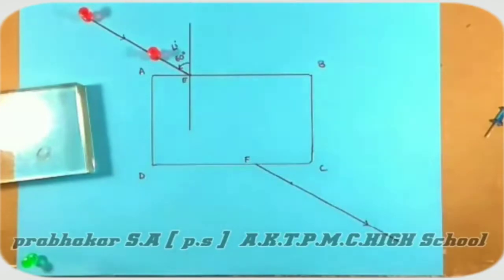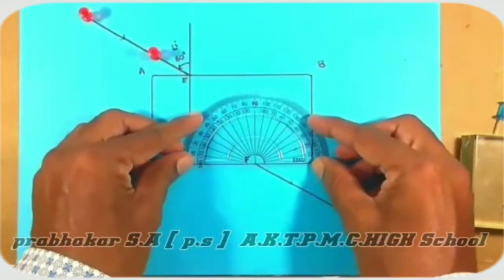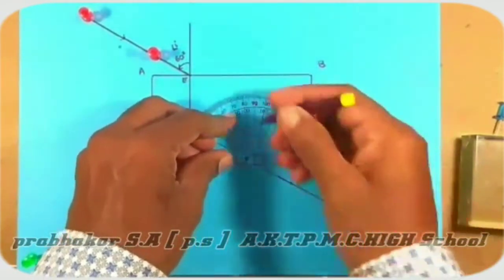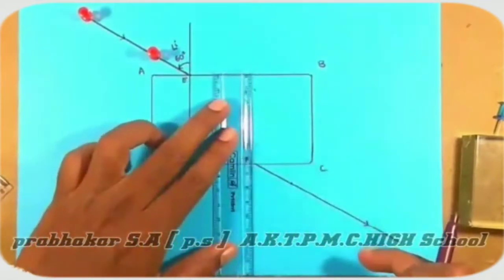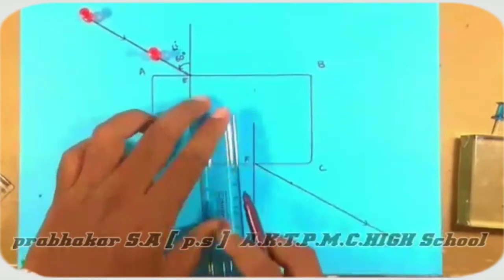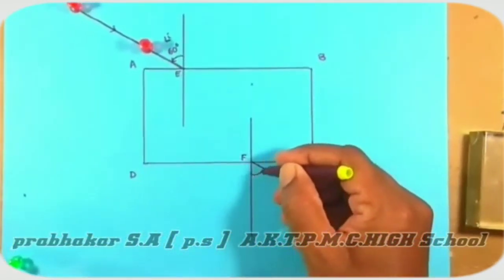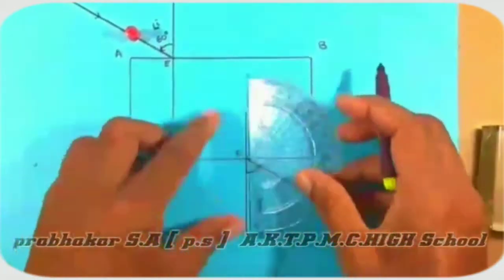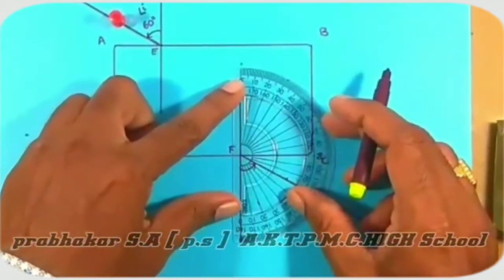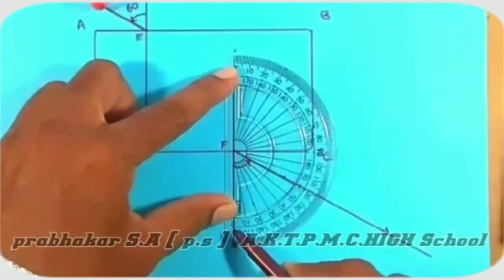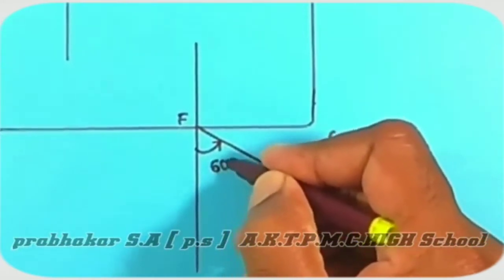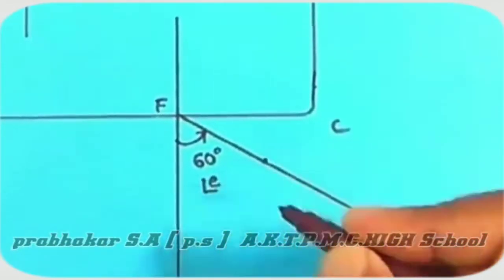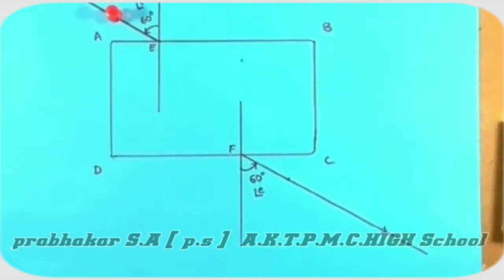Now, draw a perpendicular line or normal to CD at F. The angle made by the emerging ray with the normal, if you measure it, is 60 degrees again. This is called the angle of emergence, angle E, which is 60 degrees. That means the angle made by the emerging ray with the normal is 60 degrees.